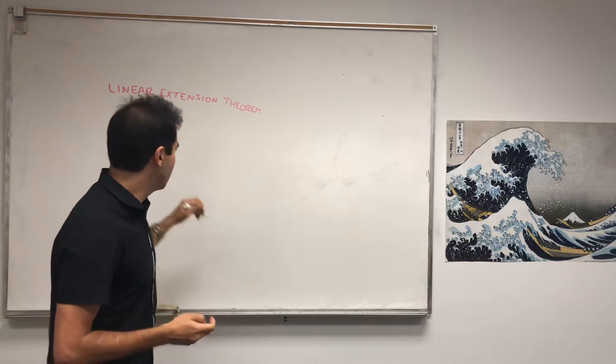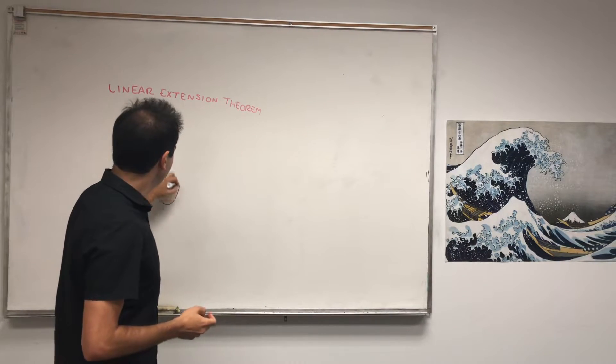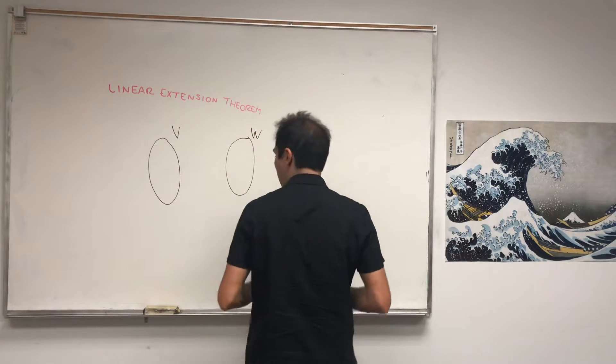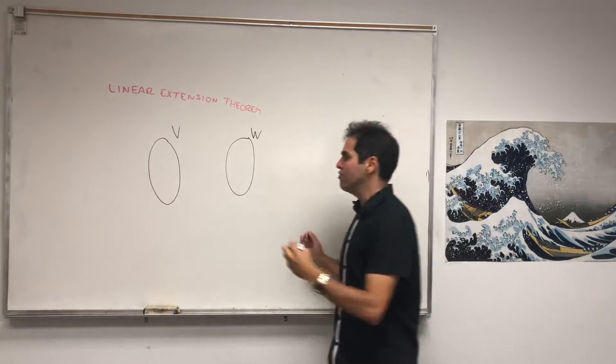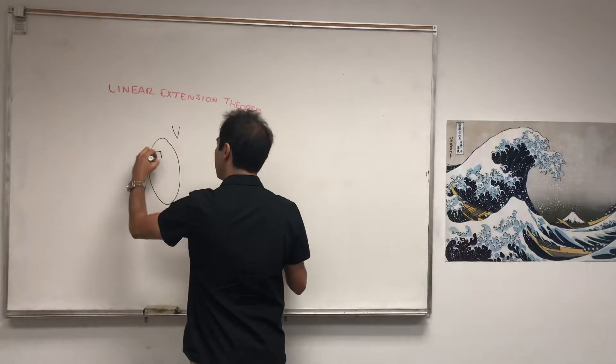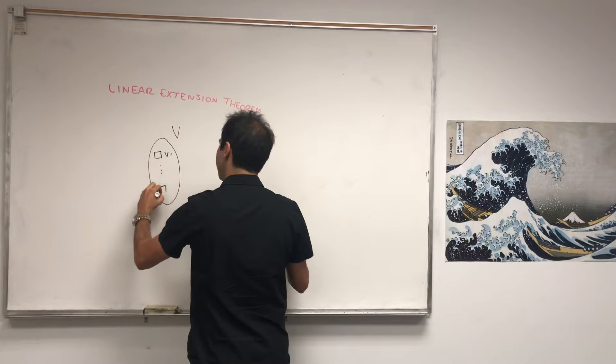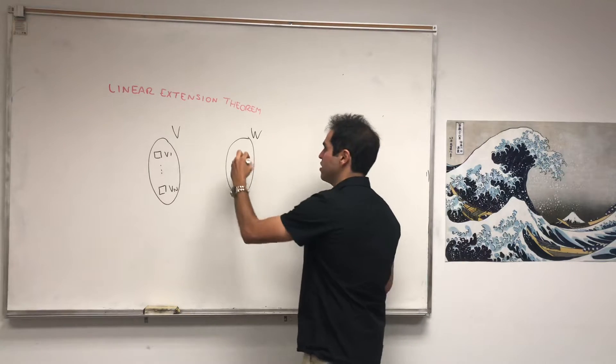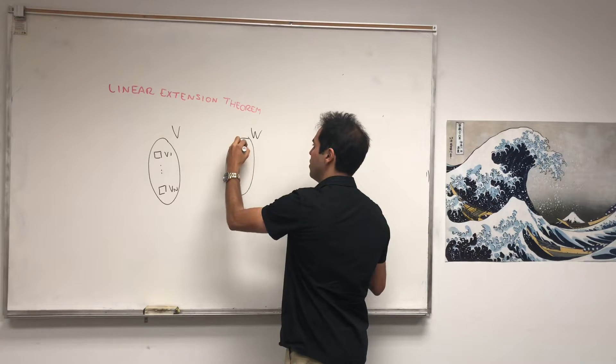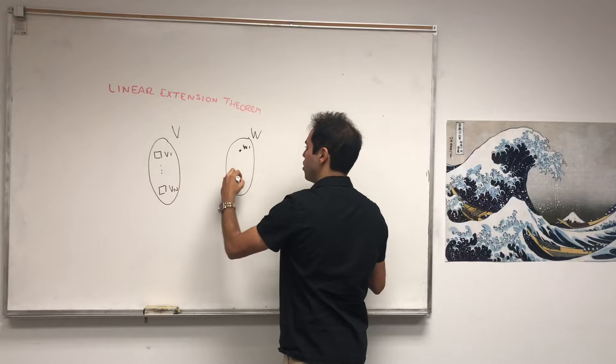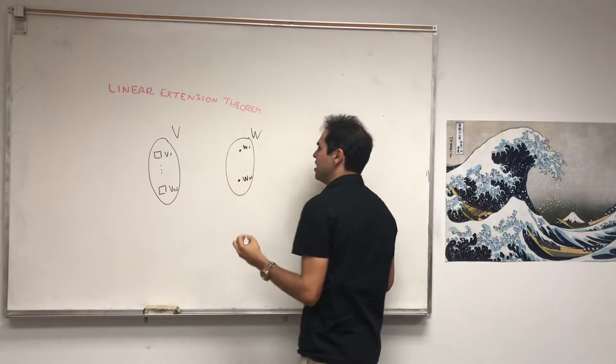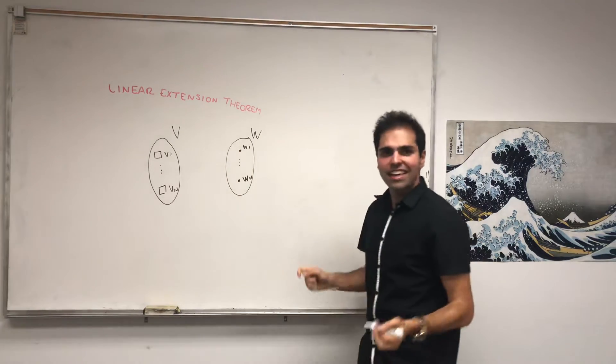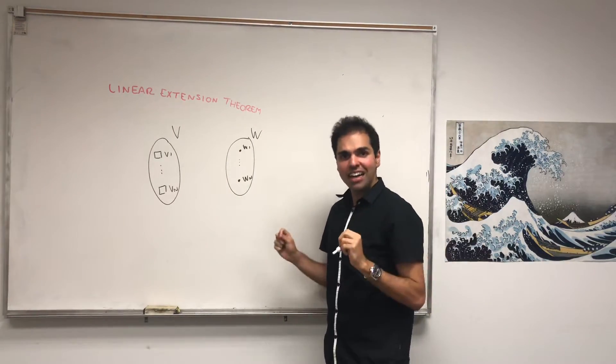Let me first illustrate it with a picture. Suppose you have two vector spaces, V and W, and let's say you have a basis for V. Let's call it V1 up to Vm, and you have some arbitrary vectors in W. Let's say W1 and then up to Wm. Those could be the same, not a problem.